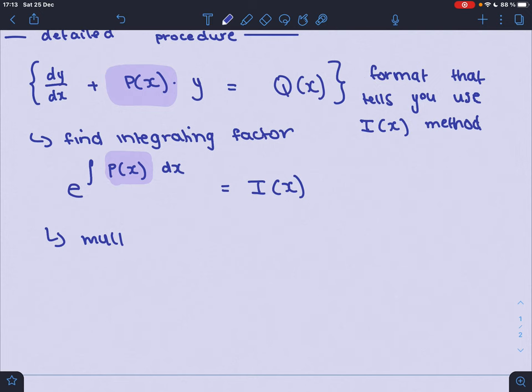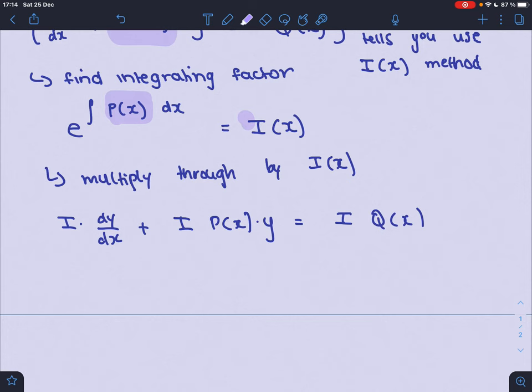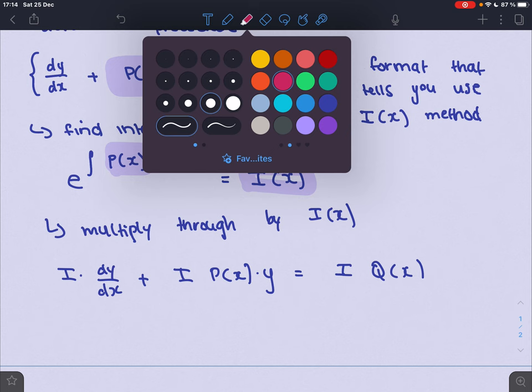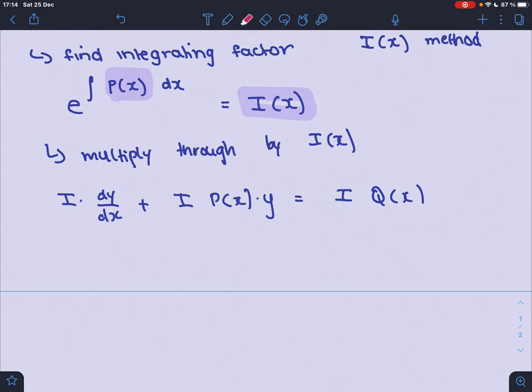Step two is multiply through by I(x). So I dy/dx plus I P(x) y equals I Q(x). And now because it is exactly because we've multiplied because someone went ahead and worked it out. No, sorry. If you multiply this equation by I, it's going to be the same as the starting point like the before of the product rule. So basically, because we multiplied it by y, this gives us the right to say that, OK...